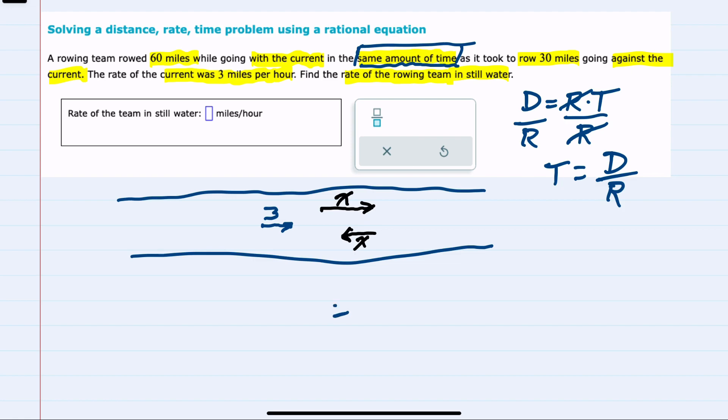On the left-hand side of my equation, I'm going to use with the current. So our distance is 60 miles, and our rate going with the current is going to be that mystery speed, X, plus the 3 miles per hour. This will be the time that the team spent rowing with the current.